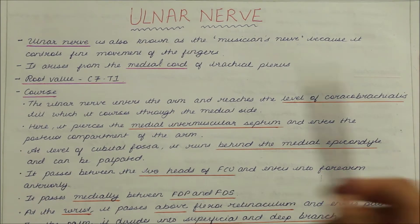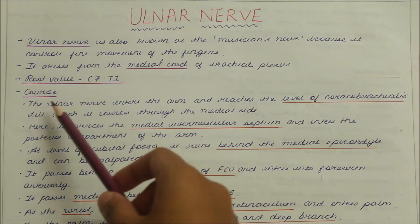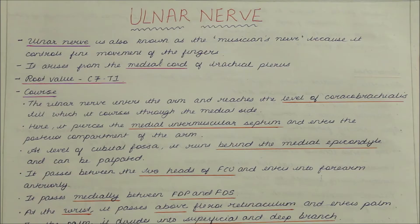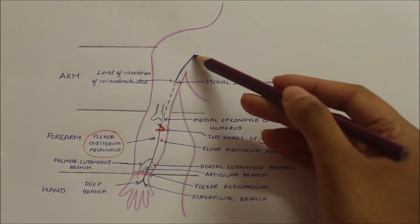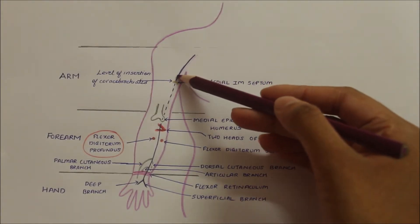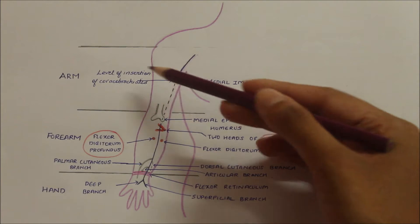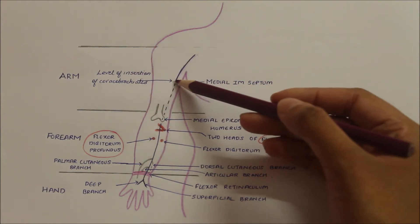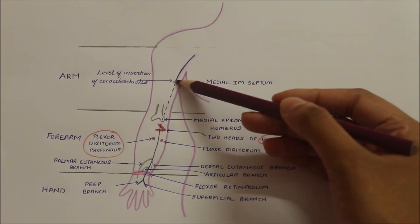Before I list out the main points of the course of the ulnar nerve, let me explain it with a simple diagram. The ulnar nerve enters the arm and reaches the level of insertion of the coracobrachialis, till which it courses through the medial side.